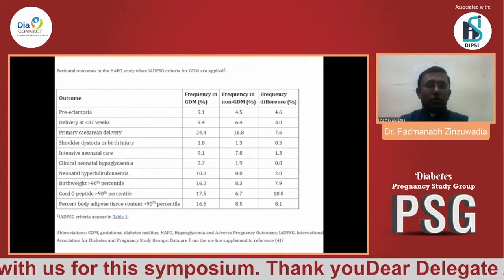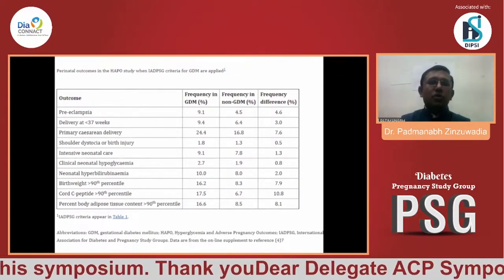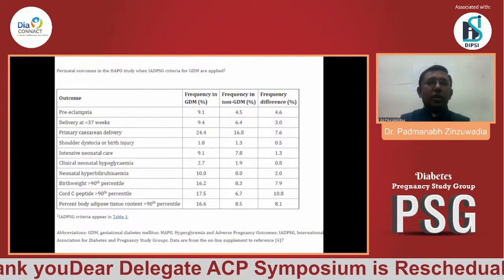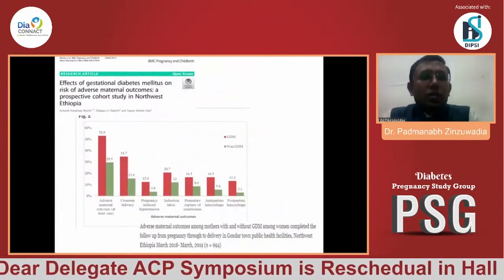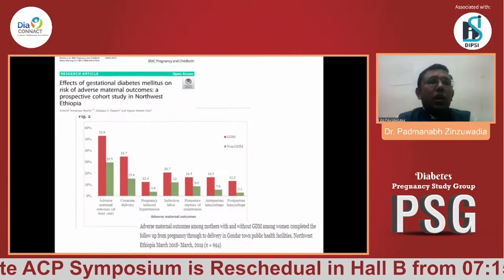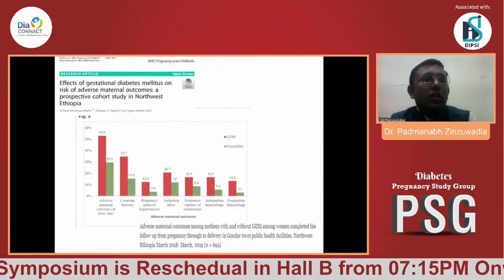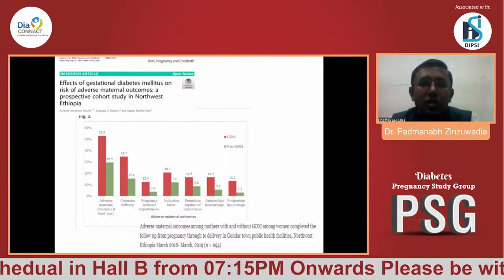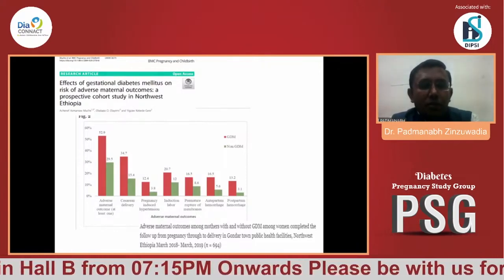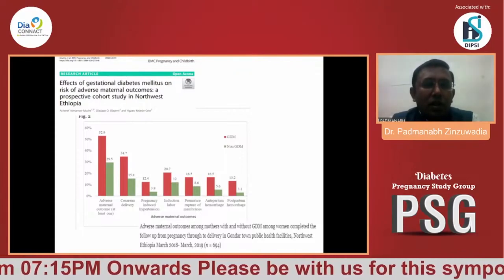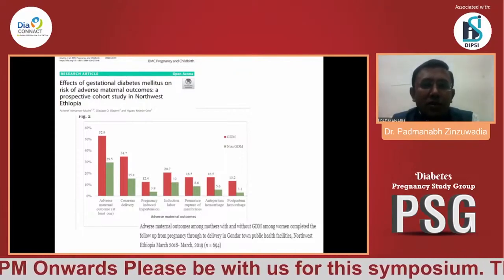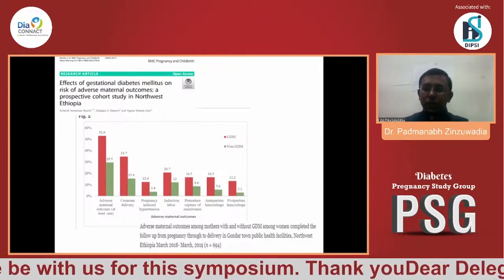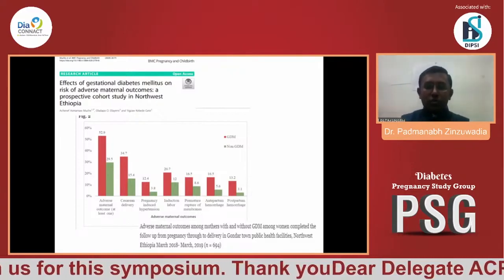These complications are documented in the HAPO study, and there are data from various regions across the globe reporting the same. One dataset from Ethiopia, even as a smaller country, shows that GDM patients face comorbidities like cesarean delivery, pregnancy-induced hypertension, induction of labor, and premature rupture of membranes. This data also supports the findings of the HAPO study.